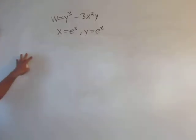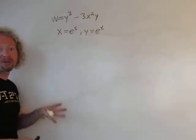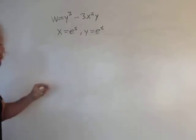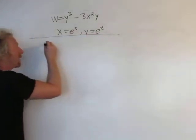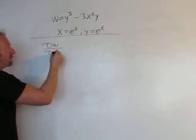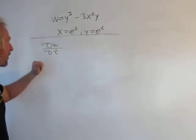Hey everyone, so today we're going to use the chain rule for multivariable calculus to find a partial derivative. We're going to work out del w del t. Let me explain what's going on first.